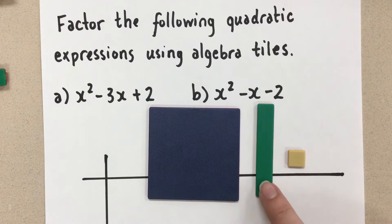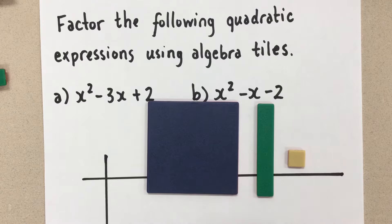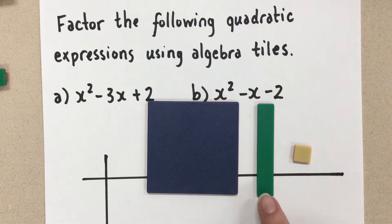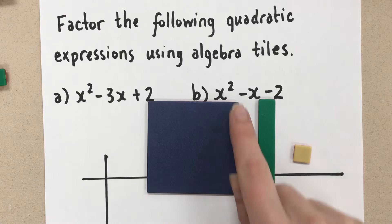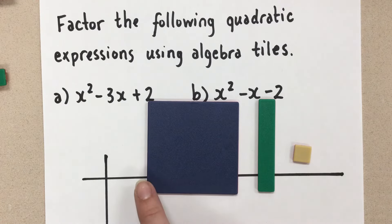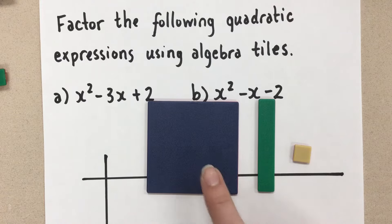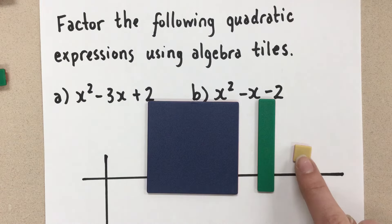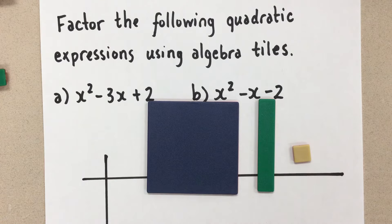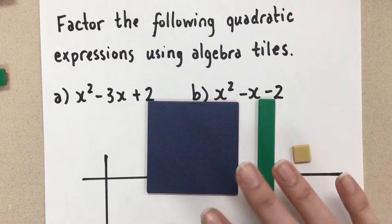So this is a 1, this is a 10, and this is 100. But instead we're going to keep this as a 1, and we're going to call this x, and then we're going to call this x squared, because it's x times x. So this is x squared, this is x, and this is a 1. That's the representation we're going to use to help us factor these expressions using the manipulatives.